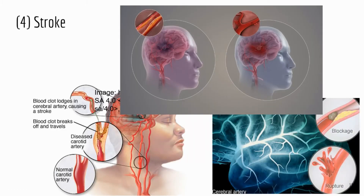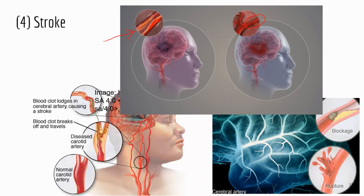Stroke is similar to a heart attack, but in the case of stroke, one of the arteries supplying blood to the brain is blocked because of plaque buildup. There is another cause as well: if a blood vessel ruptures, that can also lead to a stroke, because if the blood vessel ruptures, blood flow stops there and the downstream tissue cells don't get blood. So there are two scenarios: blockage and rupture.